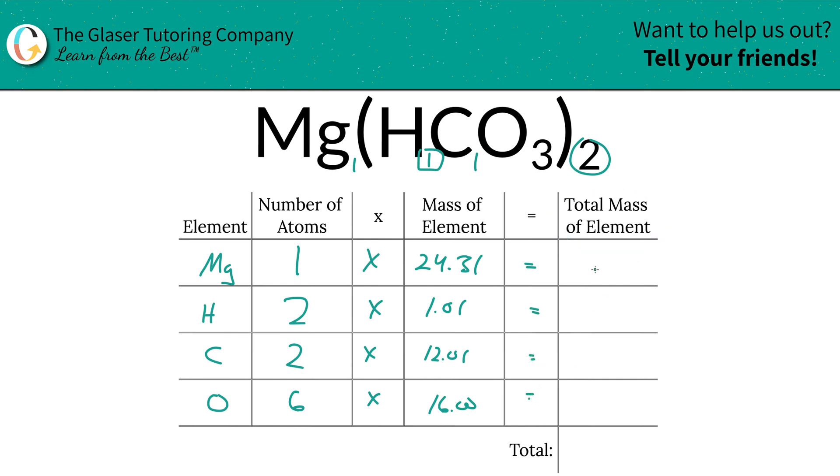The total mass of magnesium is simply going to be 24.31. The total mass of hydrogen is 2.02. The total mass of carbon is 24.02, and the total mass of oxygen is 96.